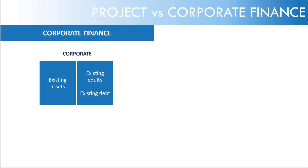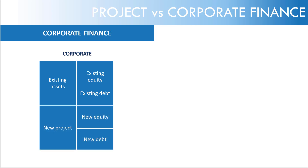Let's discuss Project vs. Corporate Finance. Take a hypothetical corporate — it has existing assets, and those are financed through existing equity and debt. If a corporate finances a new project on the balance sheet of the existing company, stakeholders — lenders, creditors, shareholders — will assess both the viability of the new project and the viability of the existing company. This is critical, because if the project were to default, creditors could demand repayment from the cash flows of the existing business.